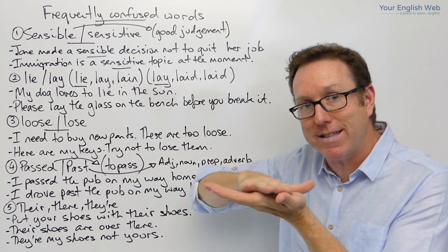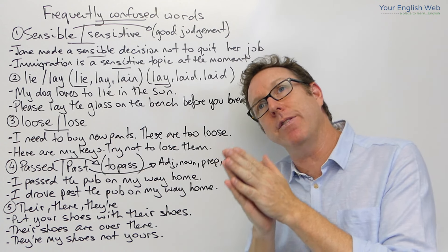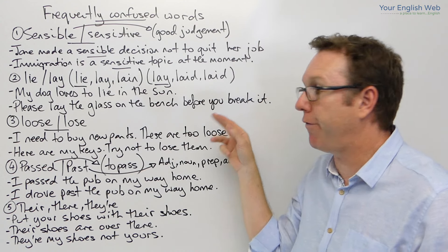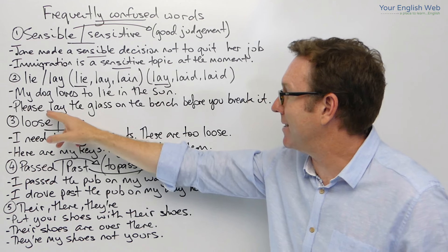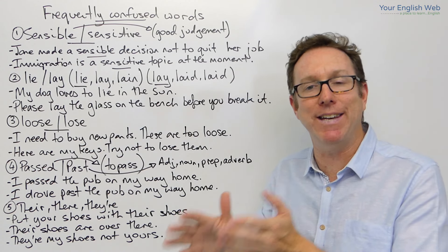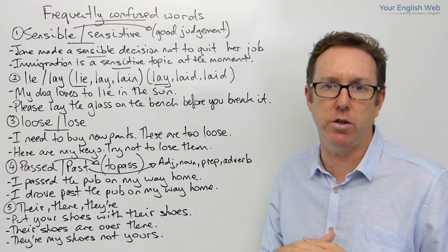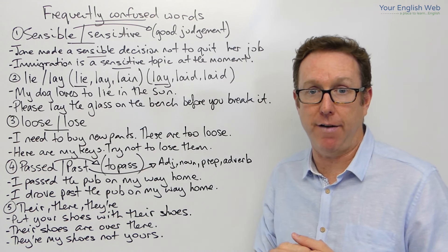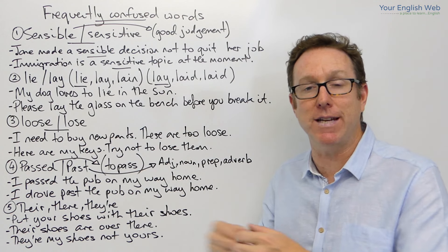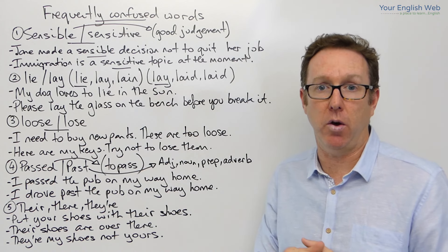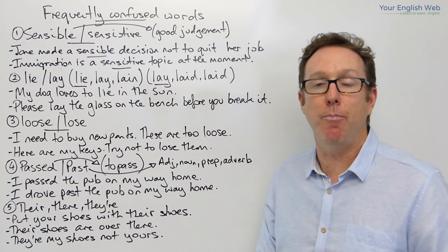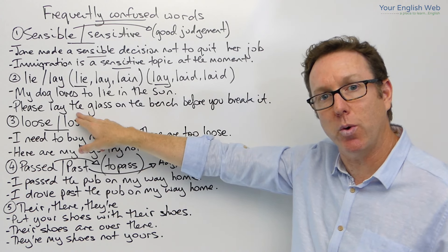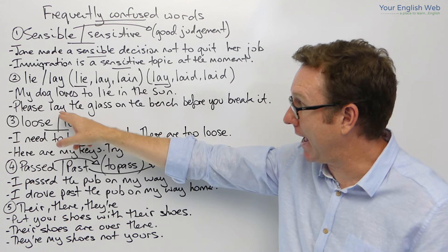So, my dog loves to lie in the sun — to be in the sun lying. And please lay the glass on the bench before you break it — to put it down. My son laid the glass on the table and it didn't break. That is the difference between the two. We could also say that lay can have an object after it — you lay the glass on the table. But you can't lie an object — you lie down. One can take an object, lay, and the other one cannot.